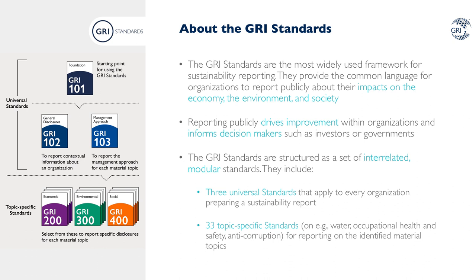The standards are organized in a modular structure. There are three universal standards that apply to every organization that wants to report on its sustainability efforts. The starting point is GRI 101 Foundation, which sets the principles for defining the content of the report. GRI 102 General Disclosures is used to report on the contextual information of the organization and its reporting practices. GRI 103 Management Approach is used for reporting on how organizations manage each topic that is material — those that reflect economic, environmental and/or social impacts and contributions towards sustainable development.